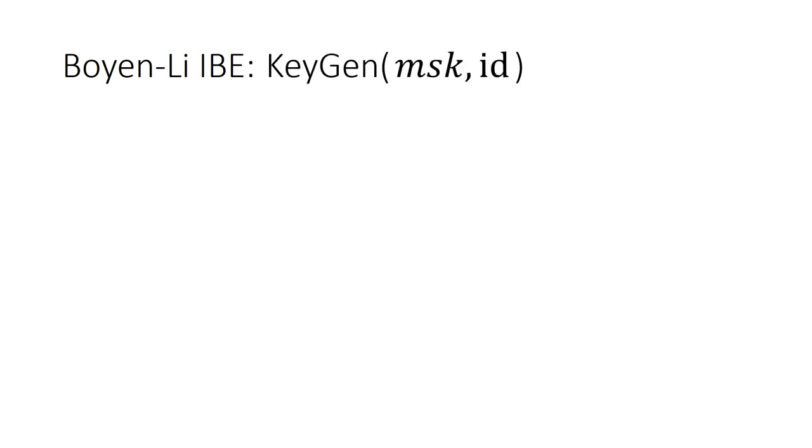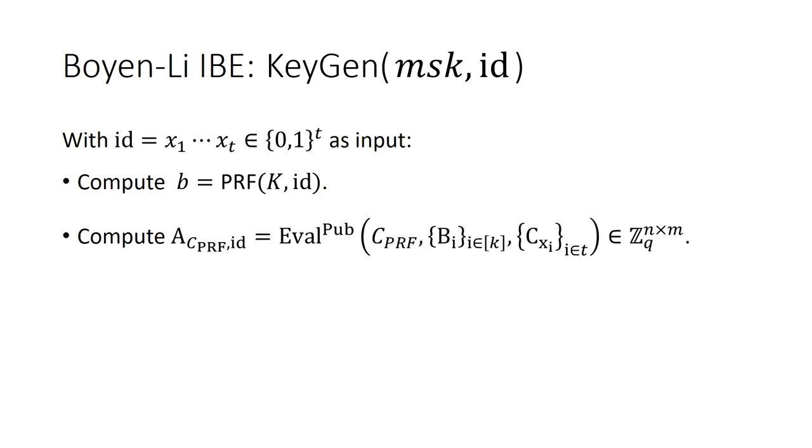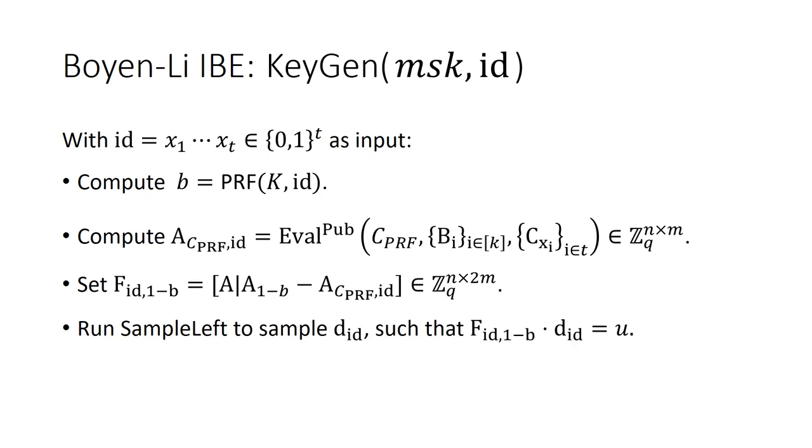Then, for key generation algorithm with ID from t-bit as input, compute PRF over ID to get 1-bit B. Compute matrix A from public homomorphic evaluation of cyclic PRF over matrix B_i and matrix C_{x_i}, set matrix F_{ID,1-B} in the following way. Finally, run sample left algorithm to sample vector D_ID such that matrix F_{ID,1-B} times D_ID equals vector U.